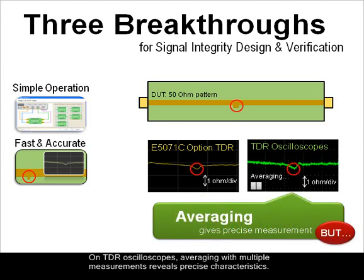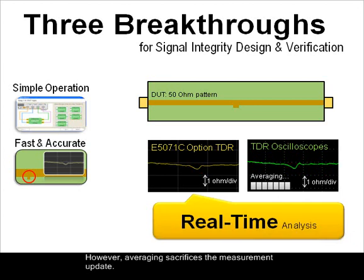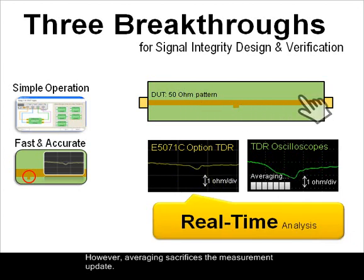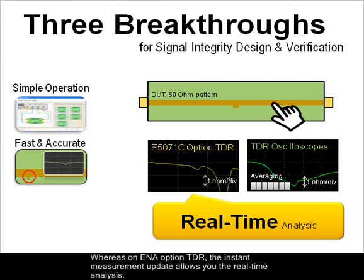On TDR oscilloscopes, averaging with multiple measurements reveals precise characteristics. However, averaging sacrifices the measurement update rate, whereas on the ENA Option TDR, the instant measurement update allows you real-time analysis.